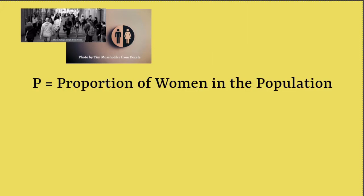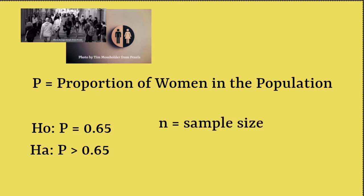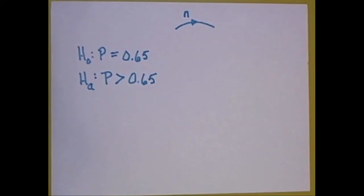In the first case, we're looking at registered voters in the United States. The variable we're considering is gender, and the population parameter is the proportion of women in the population. A researcher made the claim that this proportion was greater than 65%. If someone disagreed, they would say the proportion was less than or equal to 65%. The hypothesis that has the equal sign in it is called the null hypothesis — usually we just say equals. We'll take a sample of some particular size N to determine which hypothesis is correct.